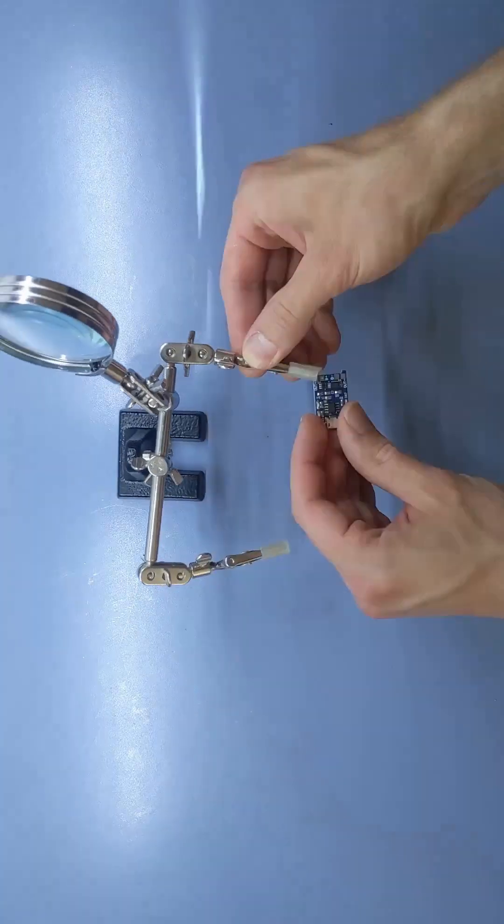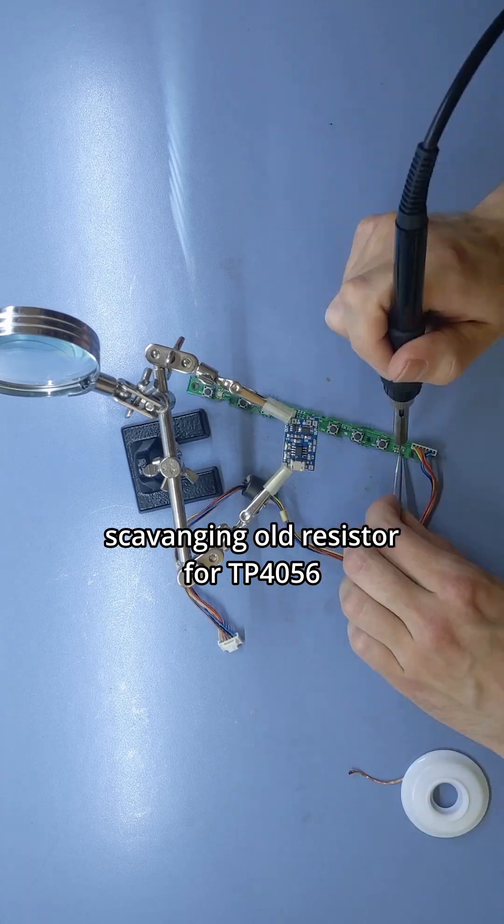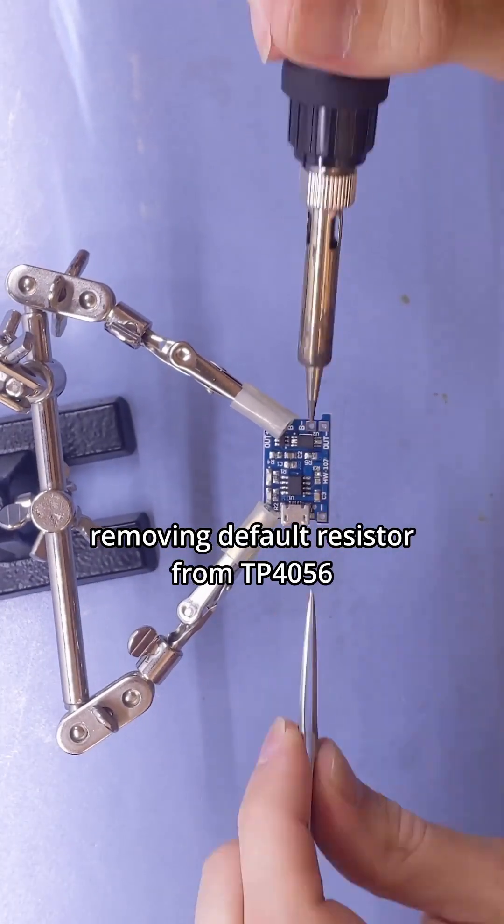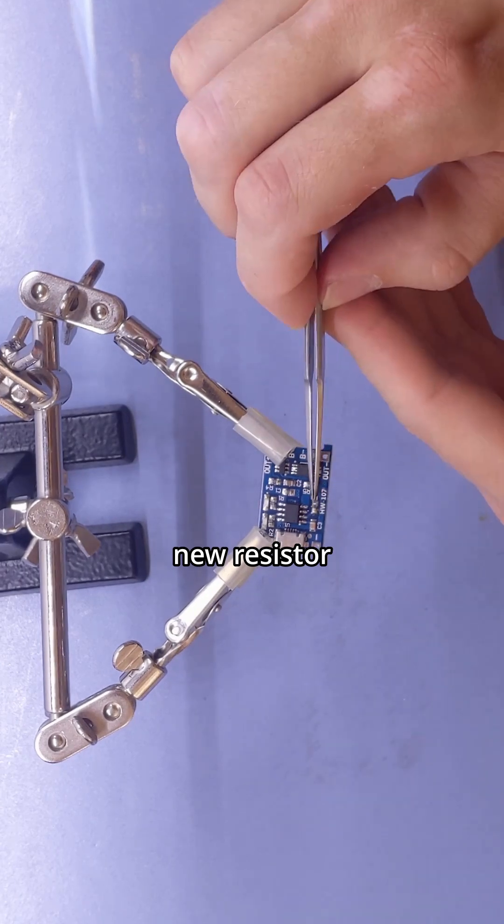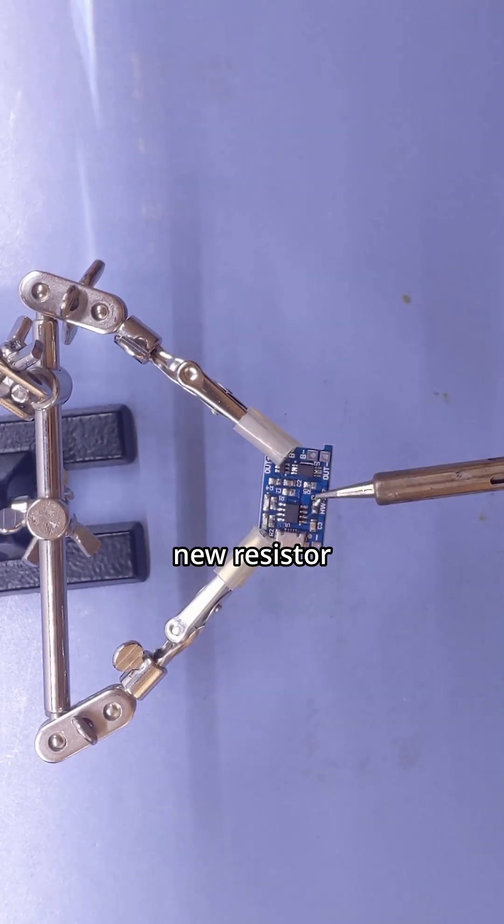To charge the cell via USB we use a TP4056 on which we change the current setting resistor to fit our size of cell. This board will also protect our cell against over-discharge.